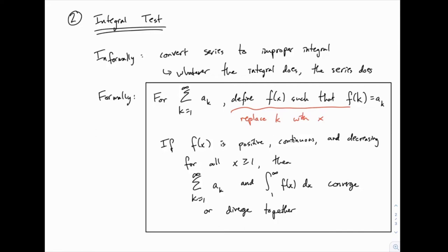The second test we'll use to find if a series converges or diverges is called the integral test. The integral test is a little bit more tedious and lengthy to carry out than some of the other tests we'll learn about later on, but it is more familiar — we can connect it back to improper integrals. We'll generally use other tests if we can, but we can fall back on the integral test to see if a series converges or diverges.